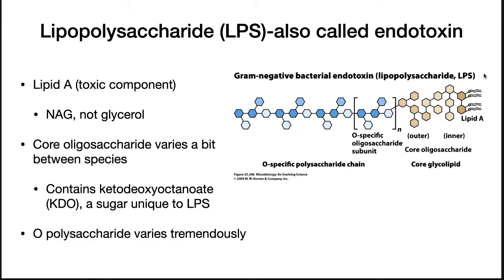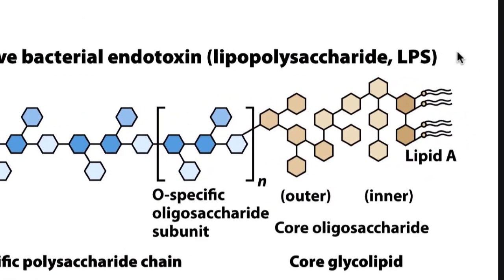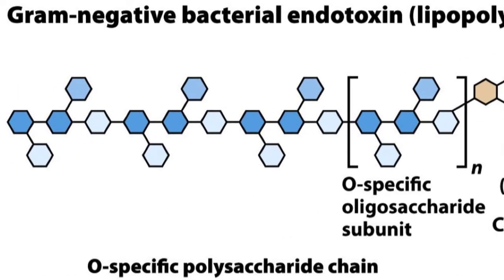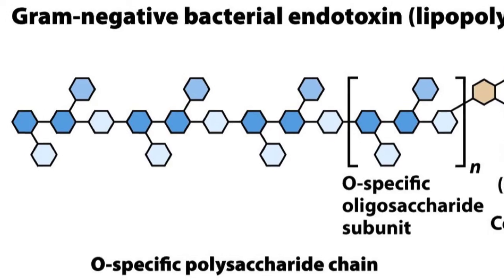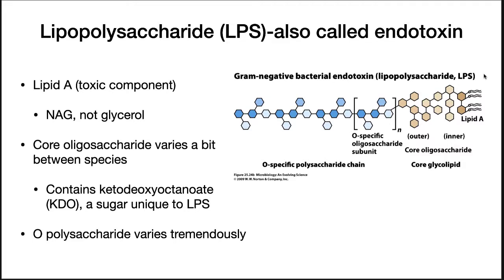LPS is anchored to the membrane by lipid A. This lipid is composed of two NAG groups with fatty acids in place of the hydrogens of hydroxyl groups, which anchor it to the membrane. Linked to the NAG is a core oligosaccharide that can vary a bit between species. This core often contains a sugar called KDO, ketodeoxyoctanoate, which is uniquely found in LPS. Beyond this is the O-polysaccharide that varies tremendously, even within a species.